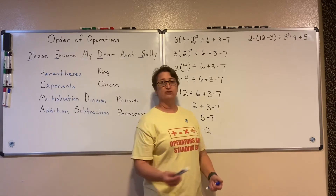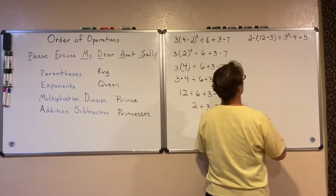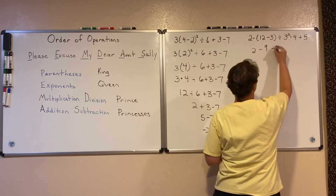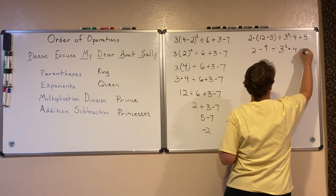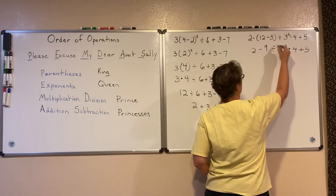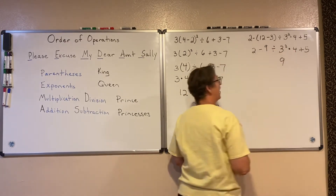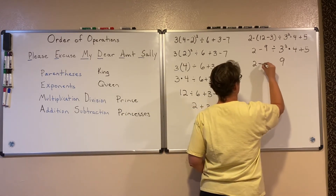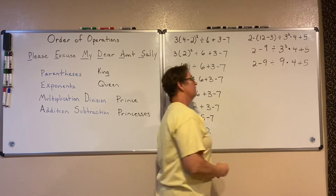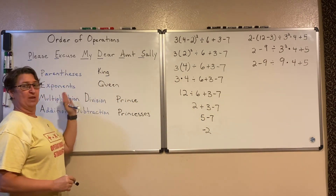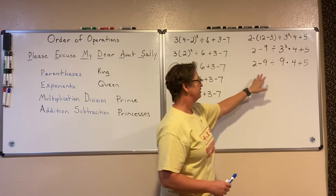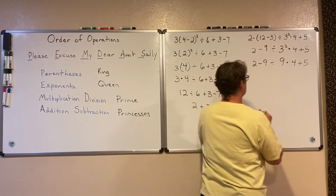Let's do another example. First, I'm looking for my parentheses: 12 minus 3 is 9, so I do that subtraction and leave everything else the same — giving me 2 minus 9 divided by 3 squared times 4 plus 5. Next, I look for exponents: 3 squared equals 9, and everything else stays exactly the same. Then I look for multiplication and division from left to right. I see division first, so negative 9 divided by 9 gives me negative 1.